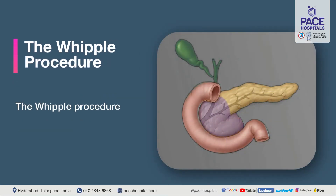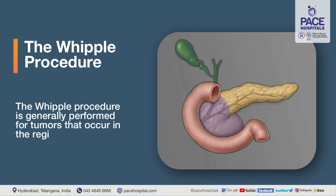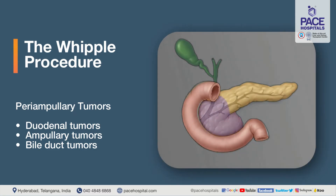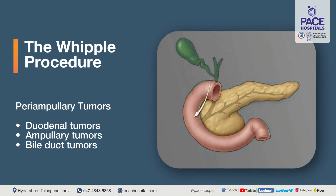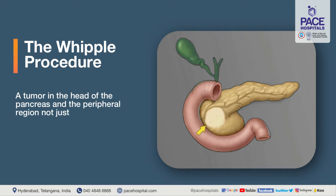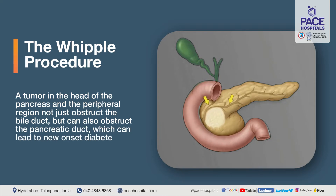The Whipple procedure is generally performed for tumors in the region of the head of the pancreas. There is also another group of smaller tumors called peri-ampullary tumors, which occur at the junction where the bile duct and the pancreatic duct join the duodenum. These could be duodenal tumors, ampullary tumors, or bile duct tumors, in addition to pancreatic cancers. Most of these tumors obstruct the flow of bile from the bile duct into the intestine. A tumor in the head of the pancreas can also obstruct the pancreatic duct, which can lead to new onset diabetes and severe pain in the abdomen radiating to the back.